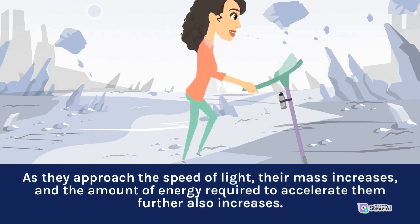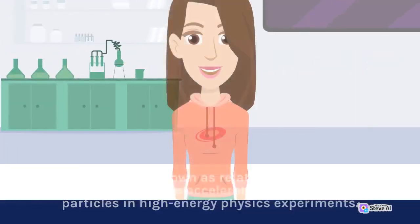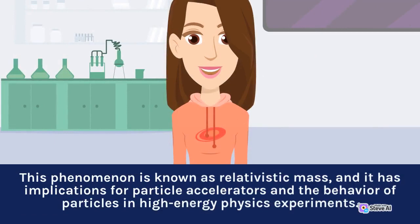As they approach the speed of light, their mass increases, and the amount of energy required to accelerate them further also increases. This phenomenon is known as relativistic mass, and it has implications for particle accelerators and the behavior of particles in high-energy physics experiments.